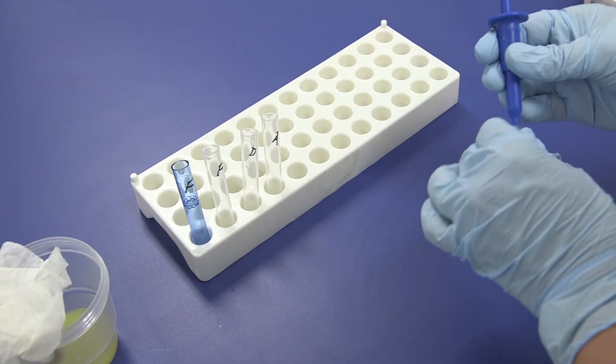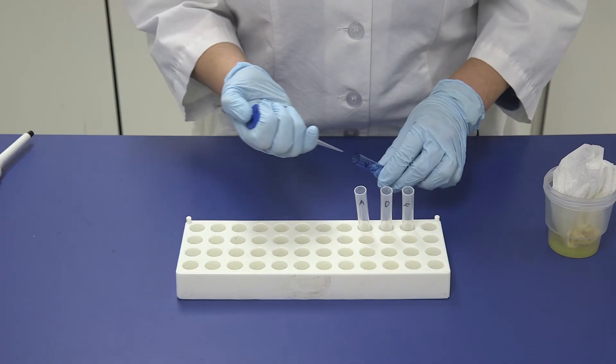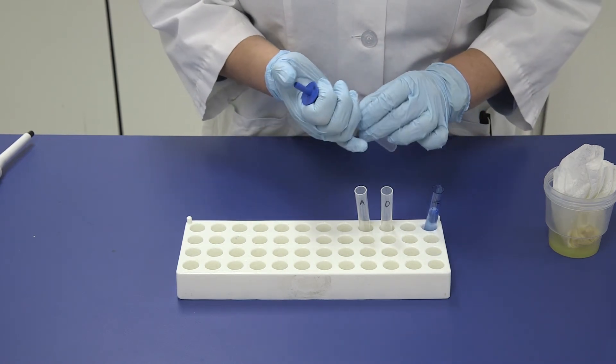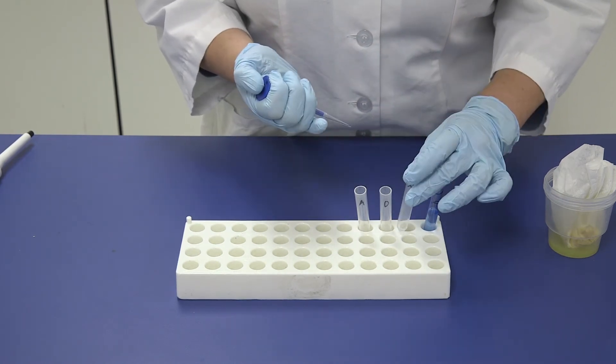Using the 100 microliter pipette with a clean tip, transfer two pipettefuls from the blue dilution tube labeled F to the clear reaction tube labeled F for a total of 200 microliters.